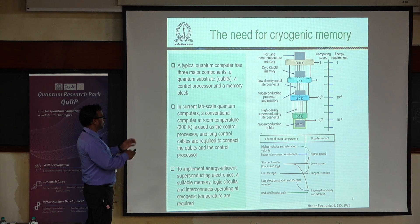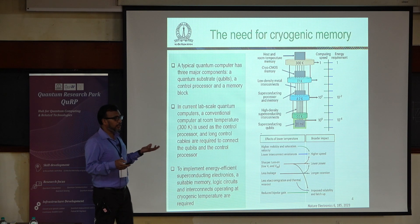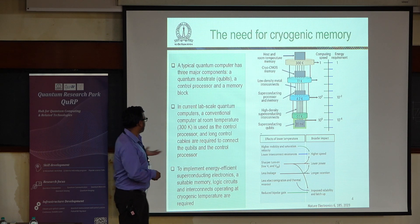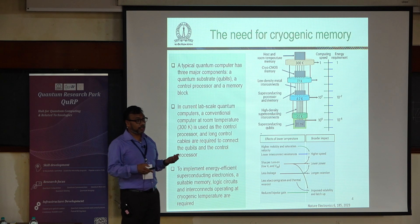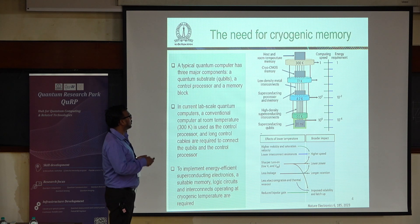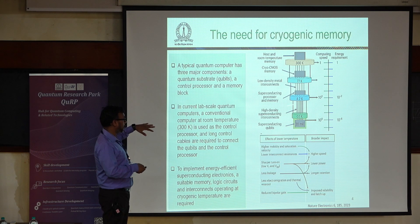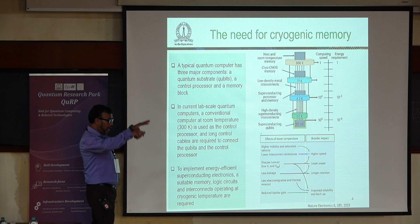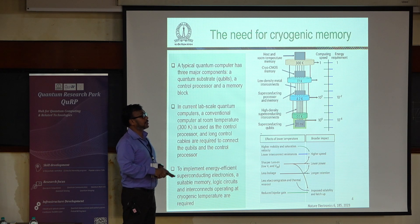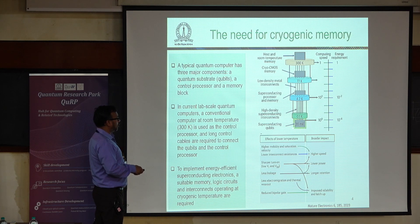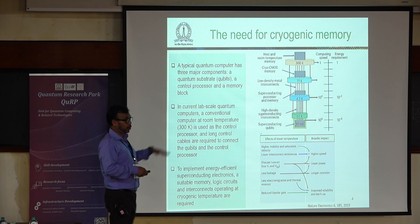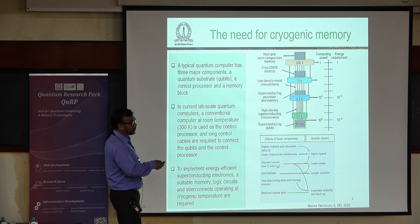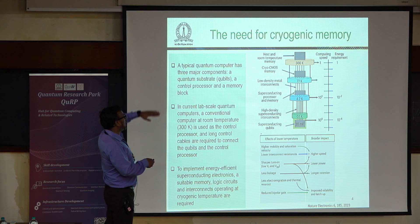What if you bring your processor and memory — conventional logic and memory — to operate at cryogenic temperature? If your qubit is running at millikelvin, you could have a superconducting processor and memory running around 4.2 Kelvin, then CMOS-based memory and logic at around 77 Kelvin, and something at room temperature. This kind of temperature ladder can save energy. Operating CMOS-based systems at low temperature gives higher mobility, and the superconducting interconnects enable dissipation-less current flow with lower resistance.